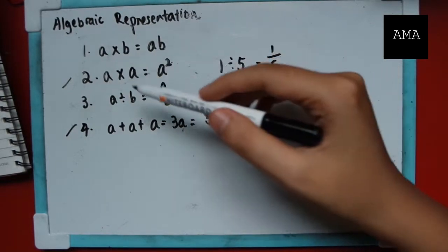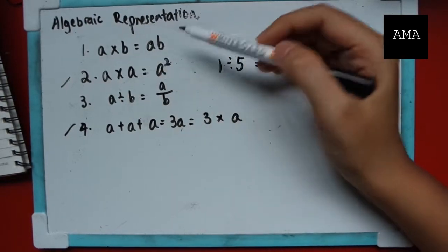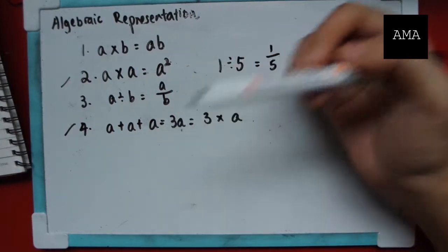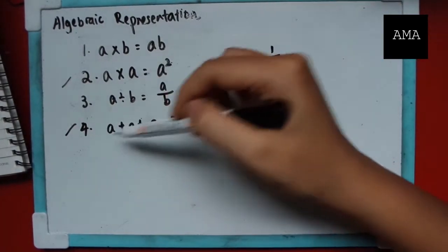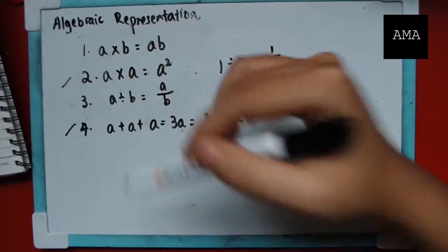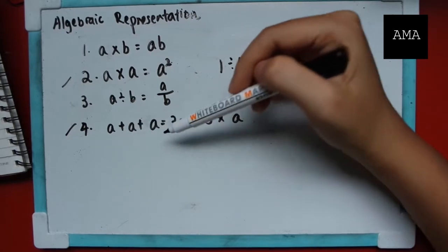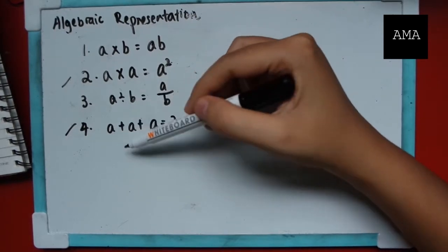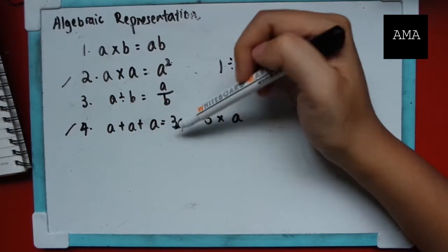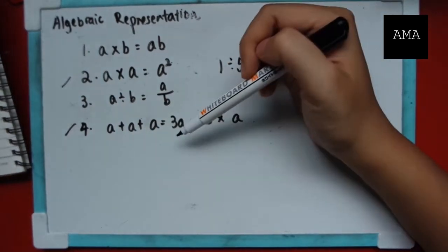When you multiply the same variable, you get a square, a cube, a to the power of 4, a to the power of whatever number. Here, addition, the number is in front. So I think of it as though they are objects. For example, this is one apple plus another apple plus another apple. So in total, I have three apples. So it is three apples.